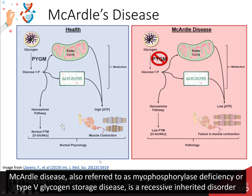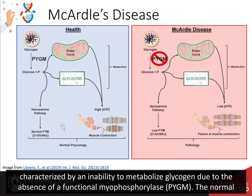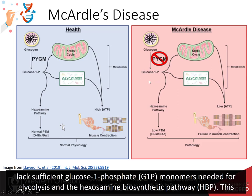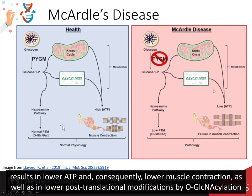McArdle disease, also referred to as myophosphorylase deficiency or type V glycogen storage disease, is a recessive inherited disorder characterized by an inability to metabolize glycogen due to the absence of functional myophosphorylase, PYGM. The normal functional pathway is shown on the left in blue, while the mutant pathway is shown on the right in red. Patients with this disease lack sufficient glucose-1-phosphate monomers needed for glycolysis and the hexosamine biosynthetic pathway.